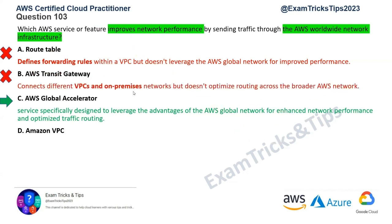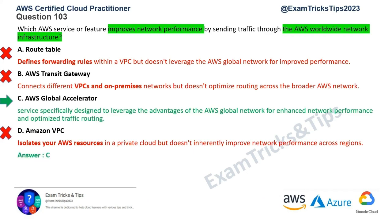Amazon VPC is your virtual private cloud, used to have your own AWS resources isolated in a private cloud so that you have security and those resources are not accessible by other customers' resources. It's not a network performance solution — it's a resource isolation solution, so that's wrong. The correct answer for this question is option C, AWS Global Accelerator. Let's move on to the next question.